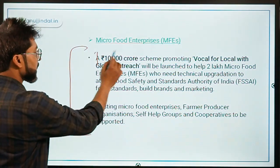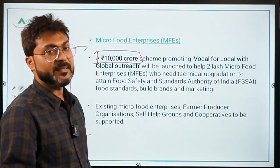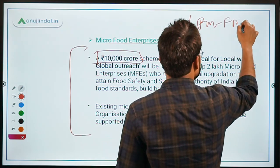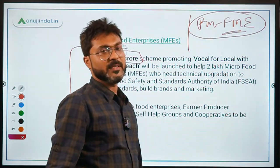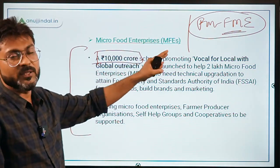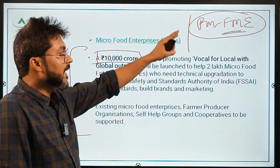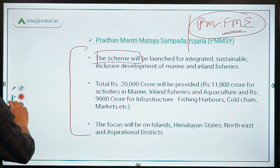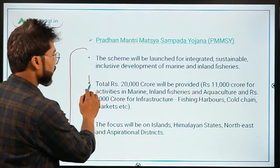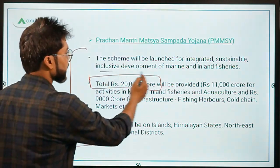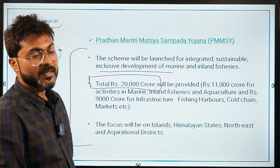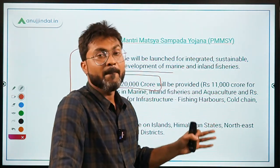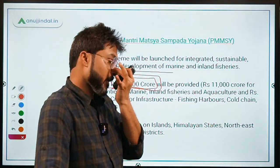For micro food enterprises, ₹10,000 crore was announced to provide financial and technical support, and later the PM Formalization of Micro Food Processing Enterprises Scheme was launched with the same ₹10,000 crore outlay. For fisheries, the Pradhan Mantri Matsya Sampada Yojana was launched for integrated, sustainable, and inclusive development of marine and inland fisheries, with ₹20,000 crore provided for implementation.